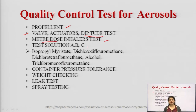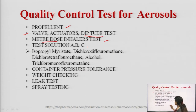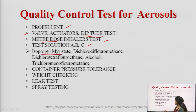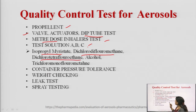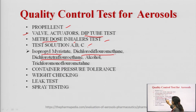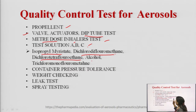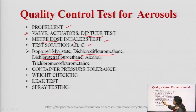Meter dose means that the correct quantity of drug and correct dose is coming out from the valve system. For this, three test solutions need to be prepared. Test solution A contains isopropyl myristate, dichlorodifluoromethane, and dichlorotetrafluoroethane. Test solution B contains isopropyl myristate, alcohol, dichlorodifluoromethane, and dichlorotetrafluoroethane. Test solution C contains isopropyl myristate, dichlorodifluoromethane, and trichloromonofluoromethane.